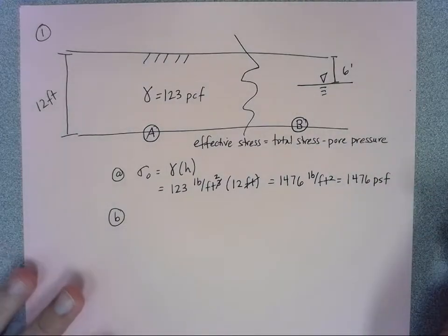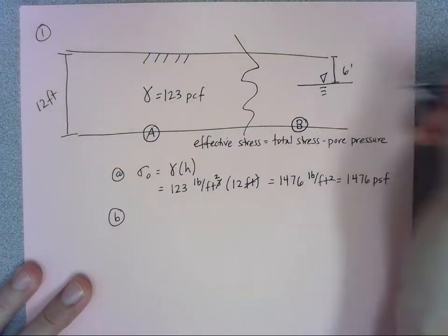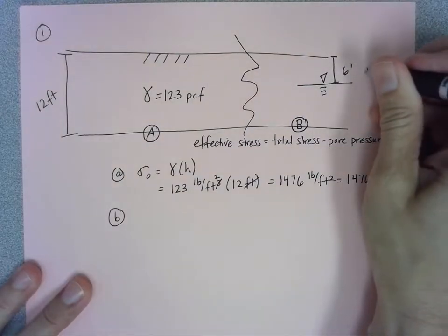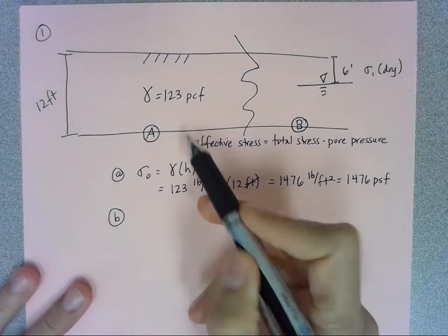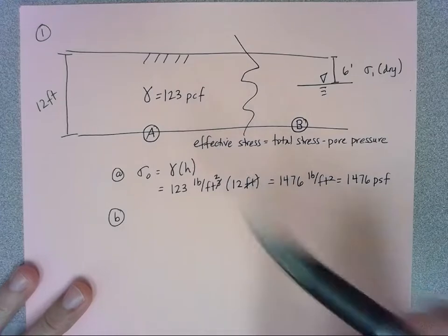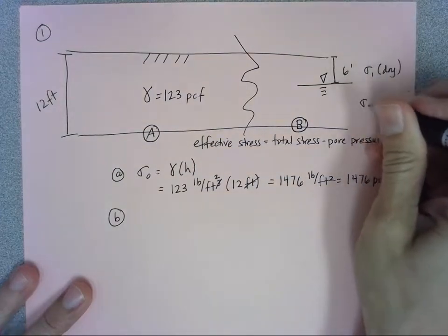So to handle this the way we were handling it in class, we can break this into a couple different layers. We'll call the top one sigma one and that's the dry part, there's no water at the top. That's handled just the way we handled part A.